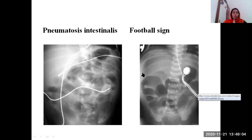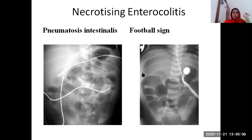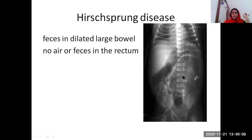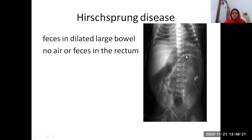Hirschsprung's disease — here, in the anal area, we are not seeing any air in the rectum, but then in the upper area there is a very much dilated appearance seen in case of Hirschsprung's disease, also called congenital aganglionic megacolon.